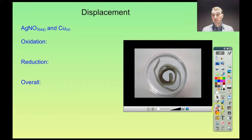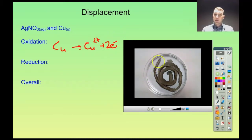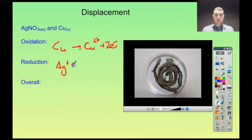We'll also see a color change in the solution over time, so keep an eye out for that. We need something being oxidized to generate electrons — in this case it's the copper wire. The solid copper is being oxidized to copper ions: Cu → Cu²⁺ + 2e⁻. Those electrons are able to reduce the silver ions in solution: Ag⁺ + e⁻ → Ag (solid).